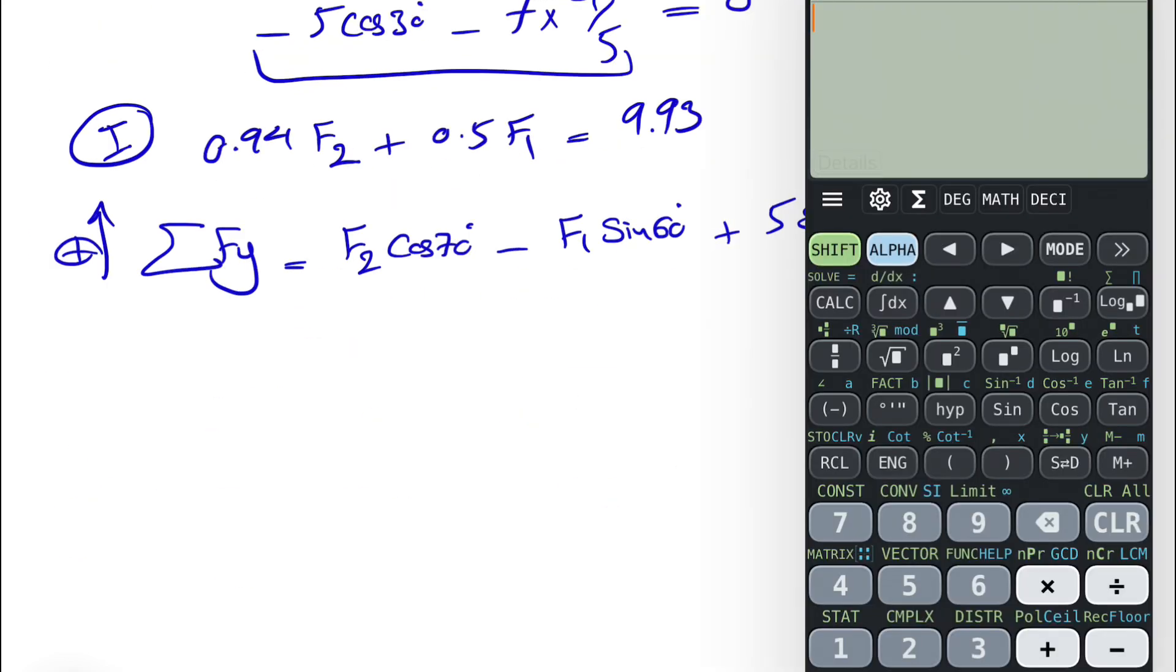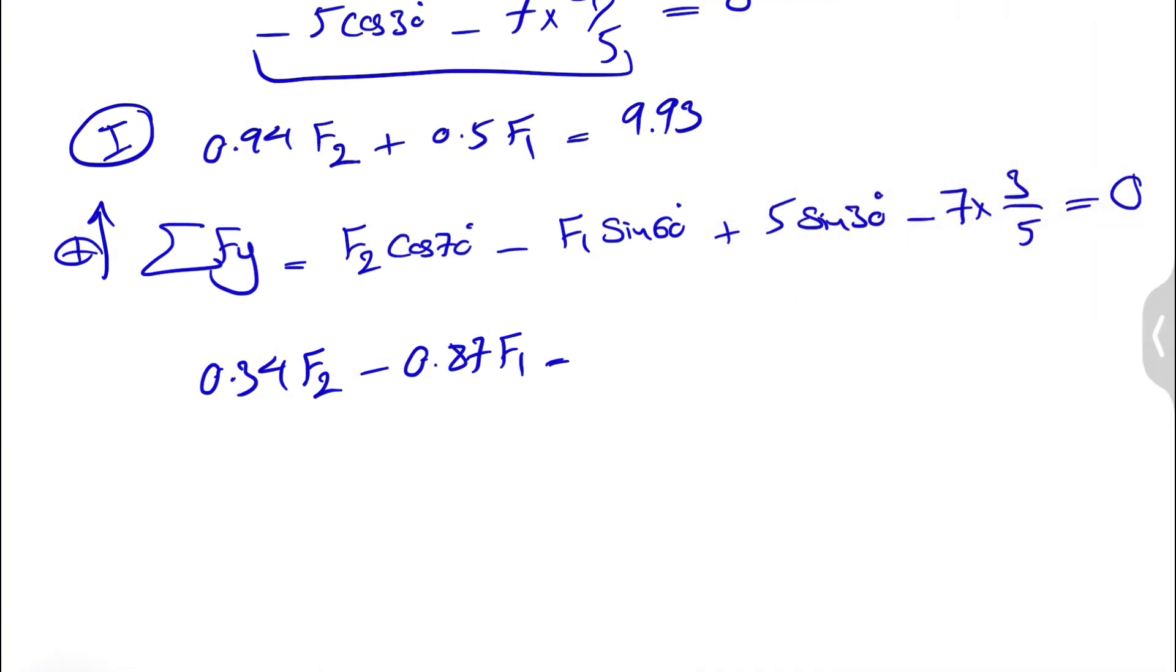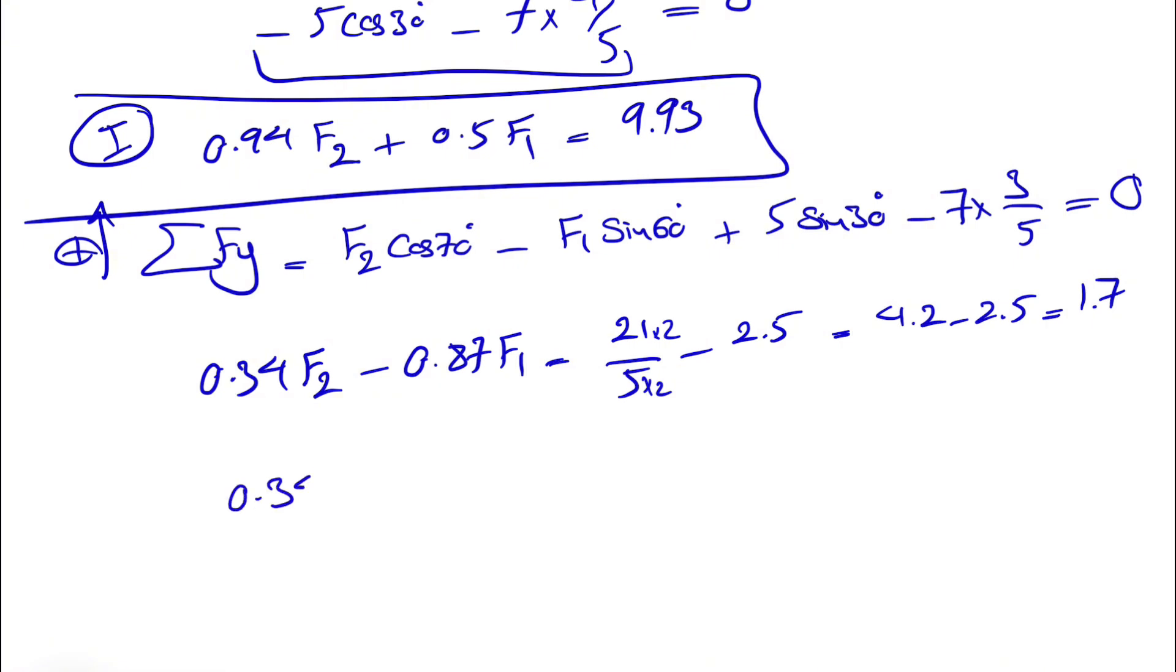Let's rewrite our equation. Cosine of 70 would be 0.34 F2. Sine of 60 is going to give us 0.87 F1 is equal to, and on the right side we have 3 times 7, 21 divided by 5 minus 5 sine of 30. Sine of 30 is 0.5, so divided by 2 will be 2.5. If we multiply this by 2, we're going to get 4.2 minus 2.5 over 1.7. So that was the first equation. The second equation is 0.34 F2 minus 0.87 F1 is equal to 1.7.